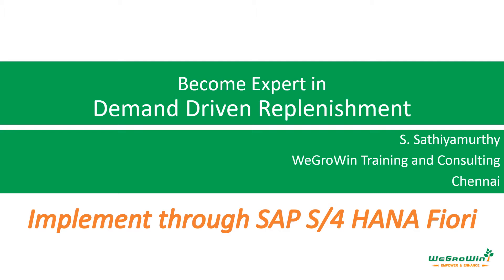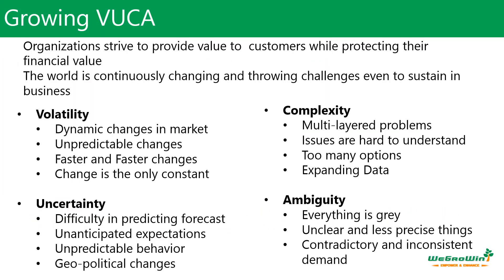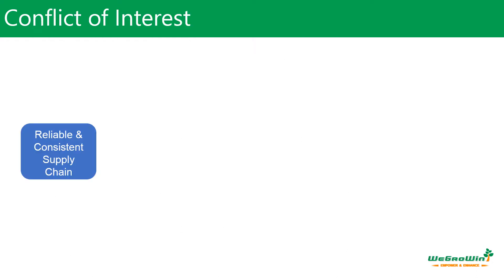VUCA means volatility, uncertainty, complexity, and ambiguity, and these things are increasing day by day. Volatility comes from dynamic changes in the market, complexity from multi-layered problems, uncertainty from difficulty in predicting forecasts, and ambiguity because everything is a gray area. All these things are creating conflicts of interest in the business.